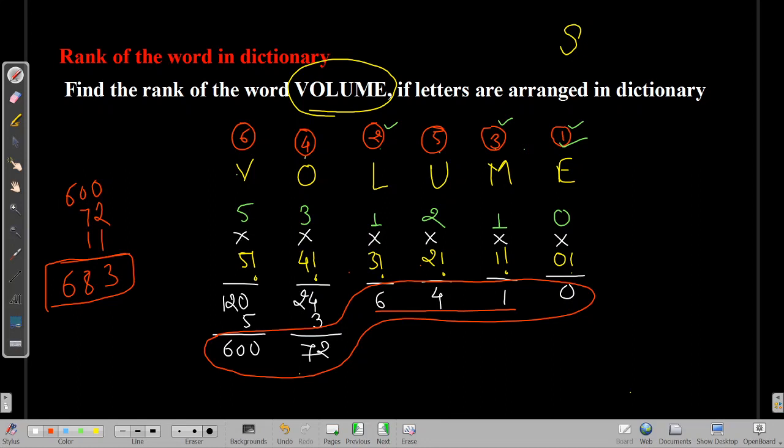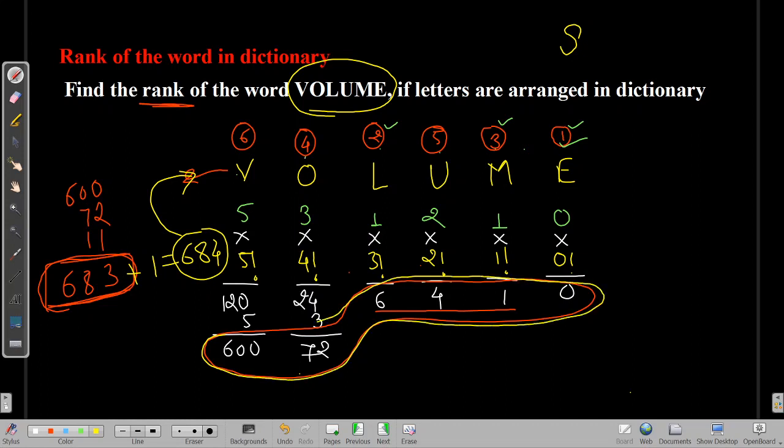Means what? What is this number? There are 683 numbers below VOLUME. There are 683 words. 683 numbers come before VOLUME. But we want to find out the rank of VOLUME. So if you add 1 to this, you will get the rank of our word VOLUME. This addition gives me how many words are there below the given word. The given word's rank will be plus 1. You will get the answer.